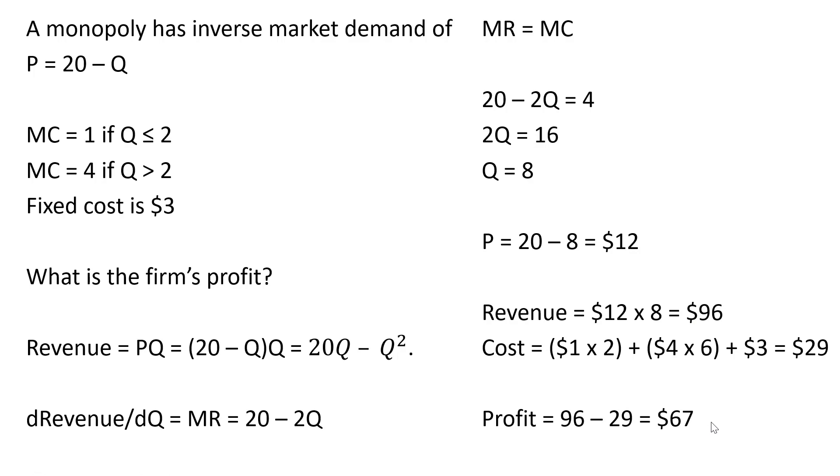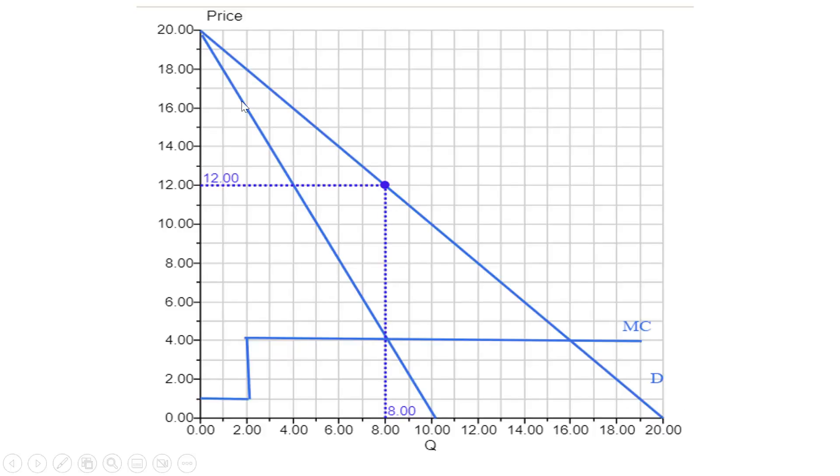The way this is going to look graphically is as follows. We got the firm's demand curve here, the marginal revenue curve, which has a slope that is twice as steep as the demand curve. Where marginal revenue equals marginal cost, that is 8 units of output, and plugging that into the demand curve coming across the profit maximizing price of $12 per unit. And you'll notice over the first 2 units here, marginal cost is 1, and then at 2 or more units here, marginal cost is going to be $4. Okay, that's it.